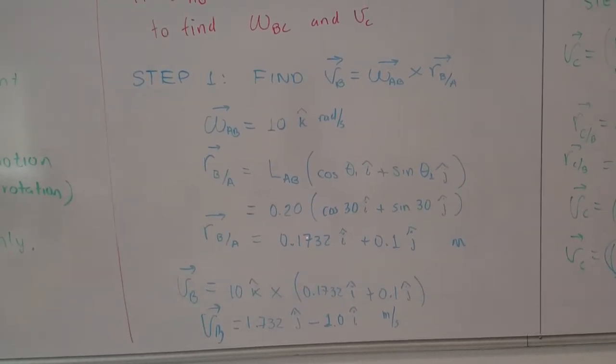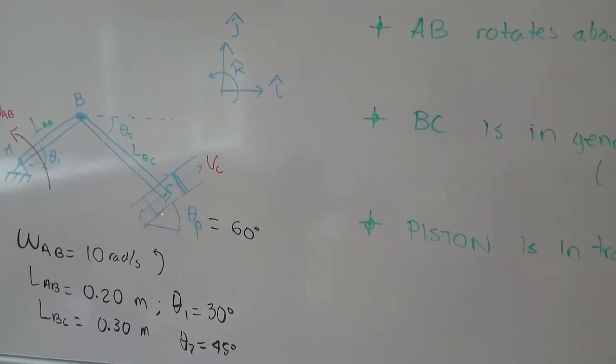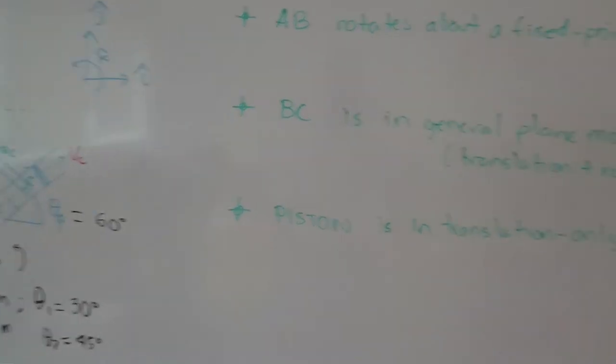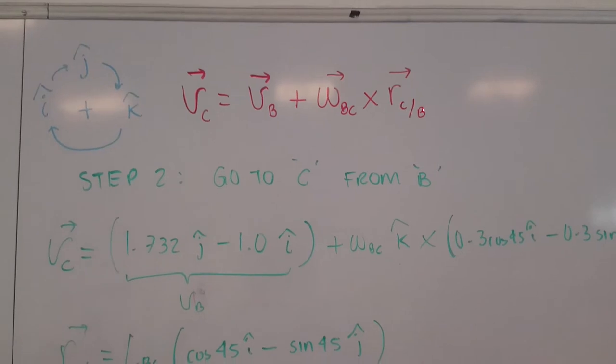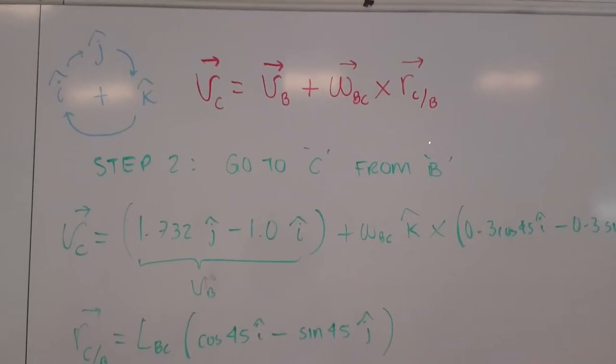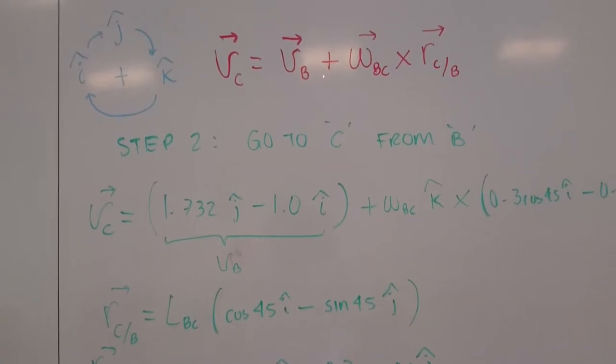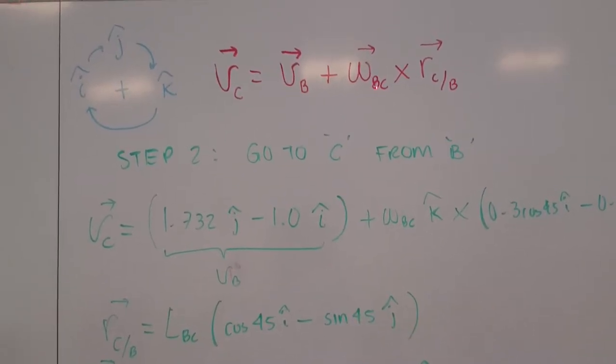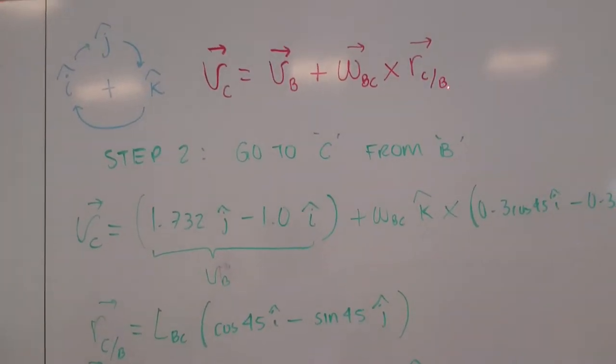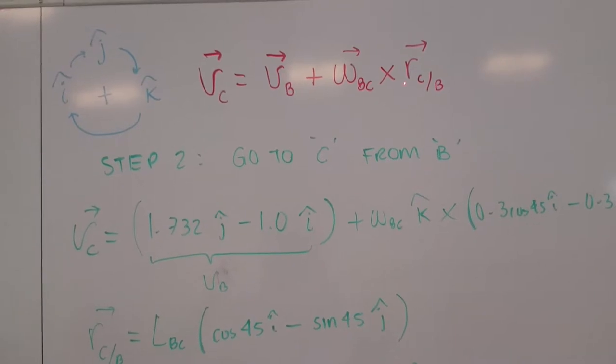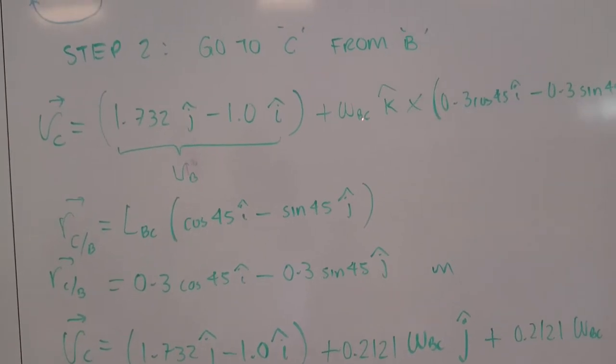Now we need to move to C. We already know the velocity of B, and we are going to move to C. We'll do that by applying again the equation. And step two, as I said, is to find the velocity of C from the velocity of B. There will be a term that we don't know, that is the angular velocity BC, but we are able to find or to express the position vector that goes from B to C. This is what we had as velocity of B.